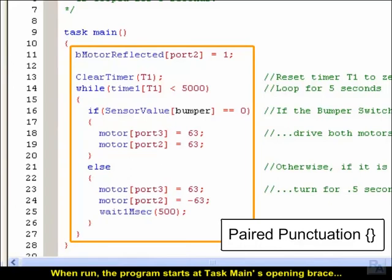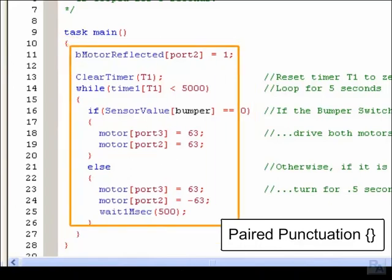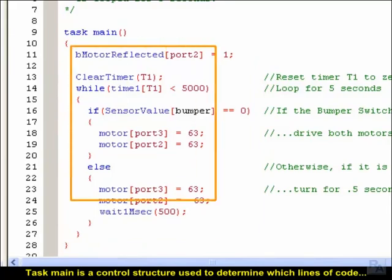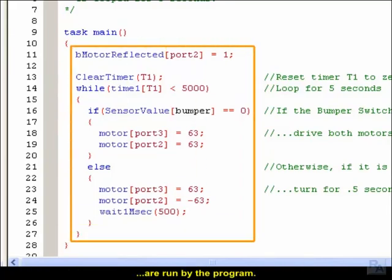When run, the program starts at task main's opening brace and ends at its closing brace. Task main is a control structure used to determine which lines of code are run by the program.